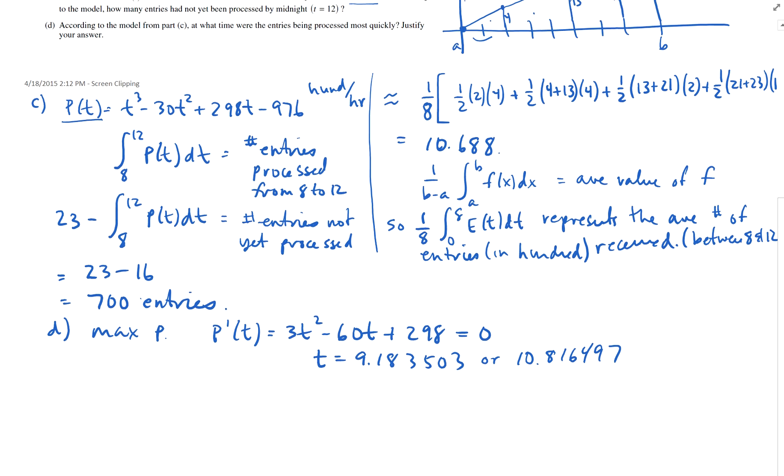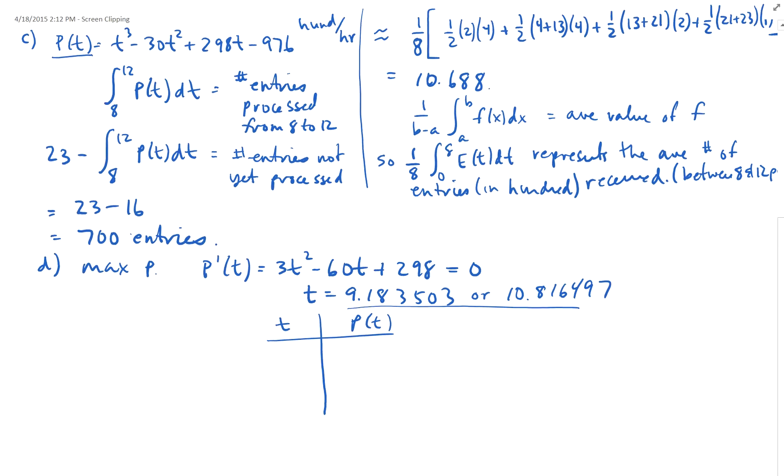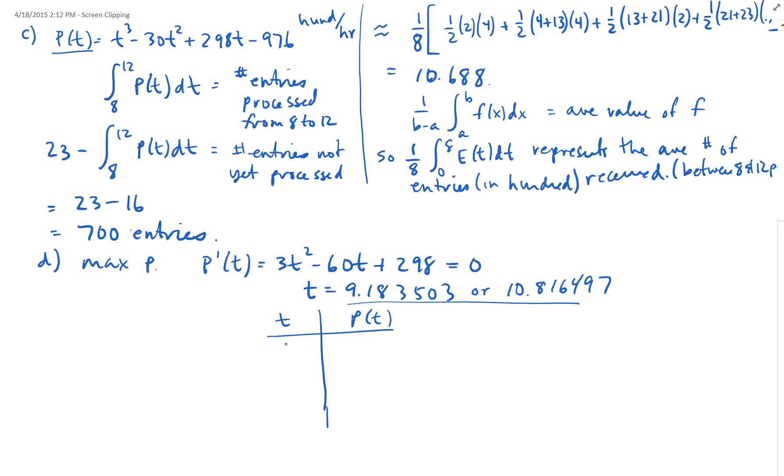Now, to actually find out, because they want to know, well, actually, I take that back, we can find out these are my critical points, but I also have to check the endpoints as well. So, I'm going to go ahead and just do a quick little table to see this, to see which one, what is the max, the absolute max. And so, if I look at 8, I look at 9.184, I look at 10.816, and I look at 12. These are my endpoints, 8 and 12, and these are my critical points, and I want to see when is P of T the maximum.